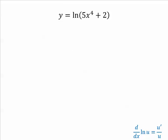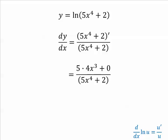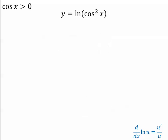Let's do an example. y is equal to ln(5x to the fourth plus 2). So the derivative of this will be u prime over u. Find the derivative of 5x to the fourth plus 2. Then clean it up and you're done. Let's do another example.